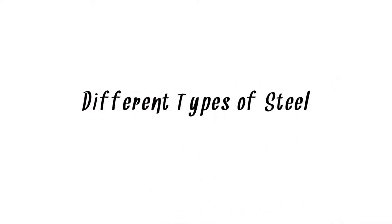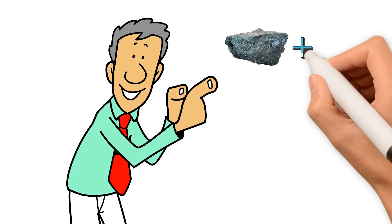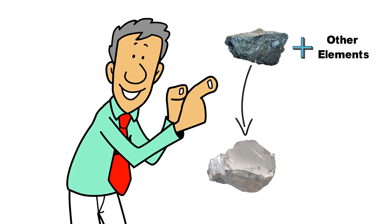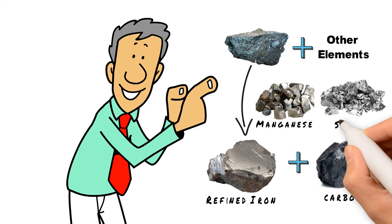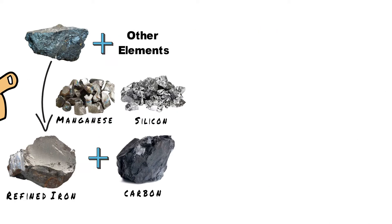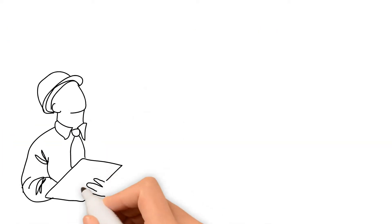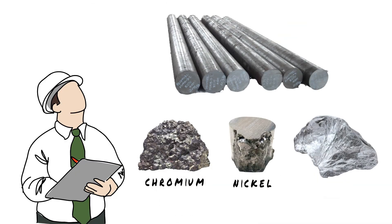When it comes to different types of steel, before you mix iron with other elements, you have to refine it and add carbon. Afterwards, you simply add elements like manganese and silicon to make different types of steels. You can make alloy steels by adding chromium, nickel, molybdenum, and various other elements.